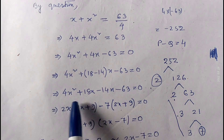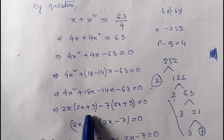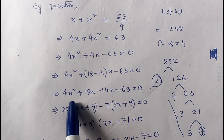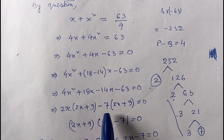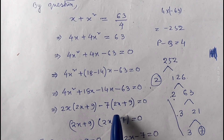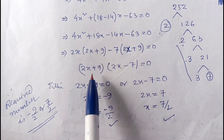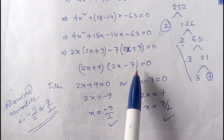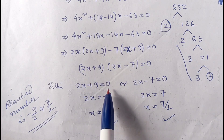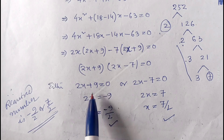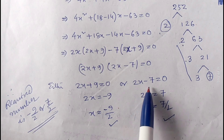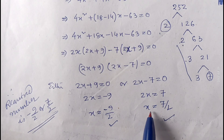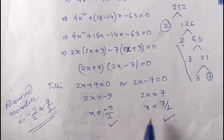From the first two terms, take 2x common to get 2x plus 9. From the last two terms, take minus 7 common to get 2x plus 9. Taking 2x plus 9 common, we are left with 2x minus 7. So either 2x plus 9 equals zero, giving x equals minus 9 by 2, or 2x minus 7 equals zero, giving x equals 7 by 2. The required numbers are minus 9 by 2 or 7 by 2.